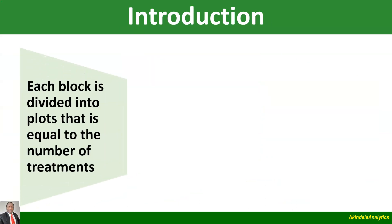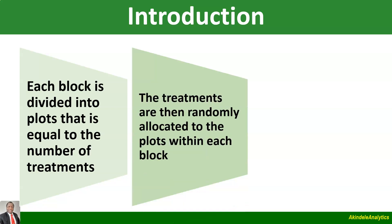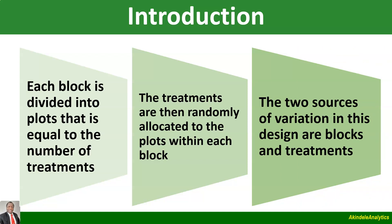Now, each block is divided into plots that is equal to the number of treatments. So in an experiment, if you have five treatments, then each block will be partitioned into five so that the five treatments can be randomly allocated to those plots within the block. The treatments are then randomly allocated to the plots within each block. In that kind of experiment, we talk of two sources of variation, which are variation due to blocks and variation due to treatments.